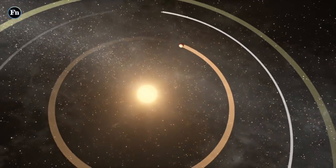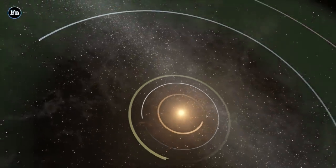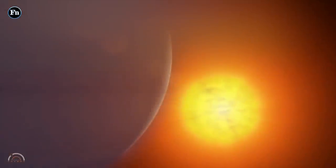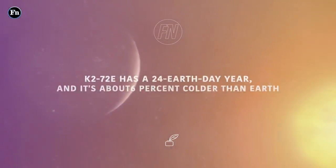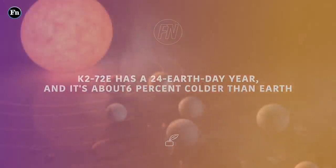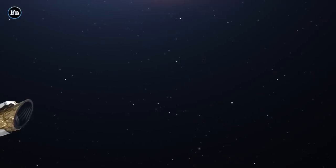For instance, K2-72c completes one orbit every 15 Earth days. Still, it is likely just 10% warmer than our planet. K2-72e has a 24 Earth-day year and it's about 6% colder than Earth.